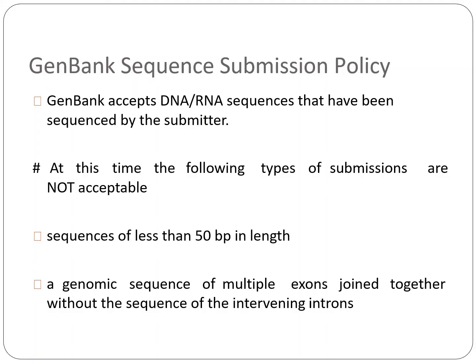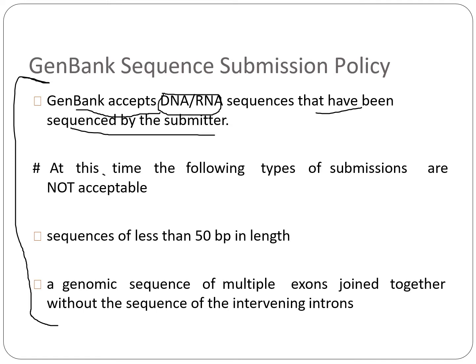Talking about some of the GenBank sequence submission policies — these are some of the important policies we need to look at for submitting sequences to GenBank databases. GenBank accepts only DNA and RNA sequences that have been sequenced by the submitter. The following types of submissions are not acceptable: sequences of less than 50 base pairs in length are not allowed, and a genomic sequence of multiple exons joined together without the sequence of the intervening introns is not allowed.